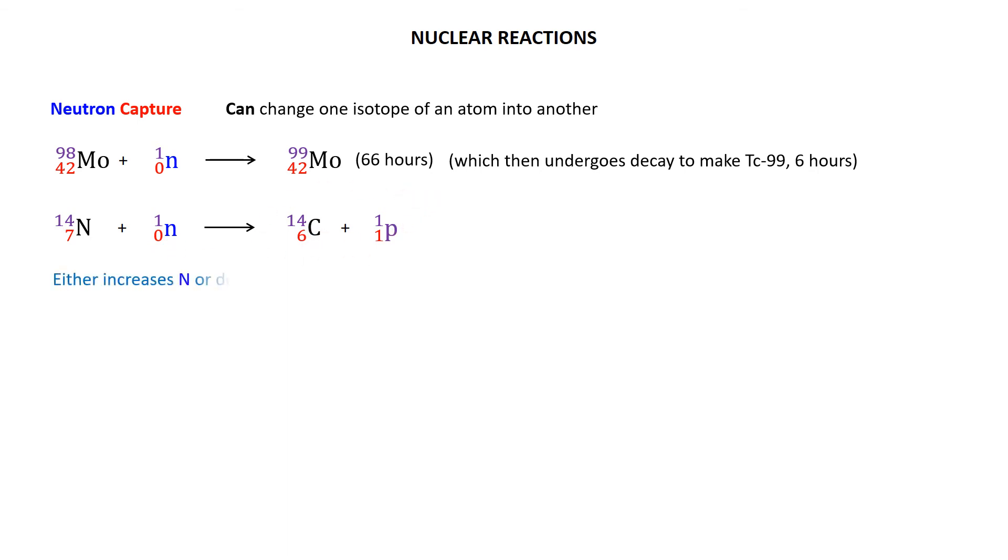Generally, neutron capture will either increase N, the number of neutrons, by 1, as we saw here, or it will end up decreasing Z by 1, as we see here. Thus, it affects the N over Z ratio and can be utilized to make more or less stable isotopes, as the case may be.